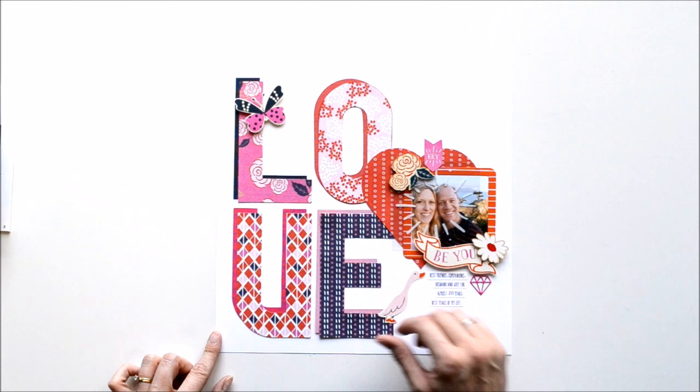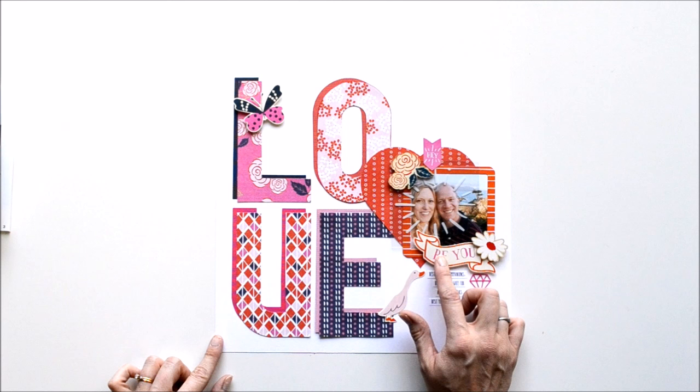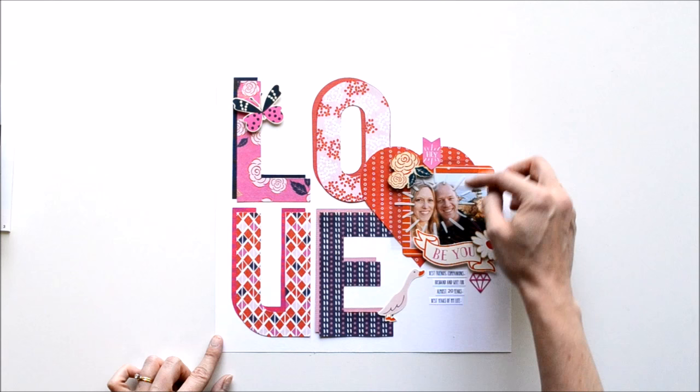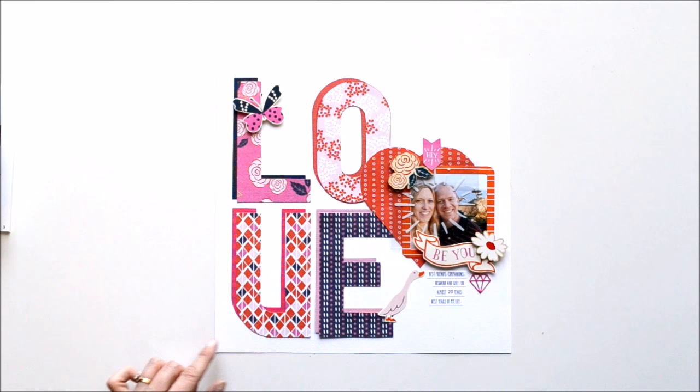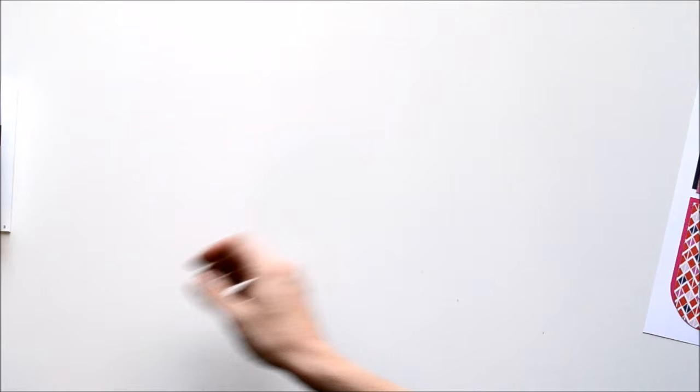I used the pretty Flower Girl collection from We Are Memory Keepers and included some wood veneer, some die cuts or ephemera pieces, a little piece of acetate here that's printed to kind of emphasize our faces, and added a little printed journaling. All right, so let's get started. I'm going to show you how to use the tool to make one of these letters and also how to make the heart.